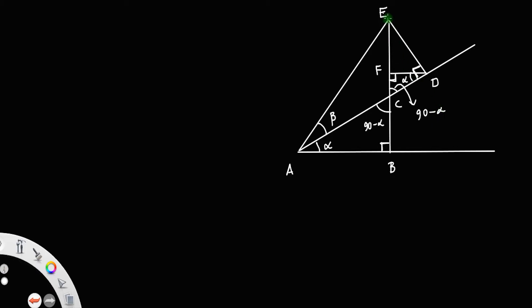So, if you consider triangle E, D, C, this angle is also alpha. I am just writing only the angle alpha and leaving all other angles. So you have all the angles and the points marked.